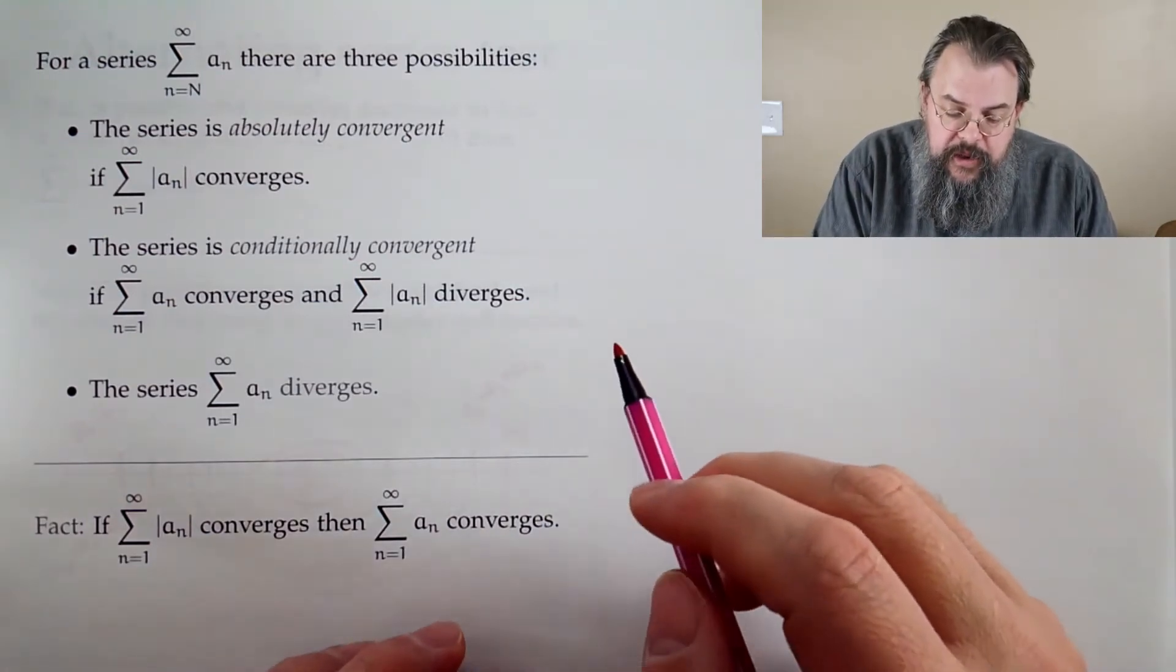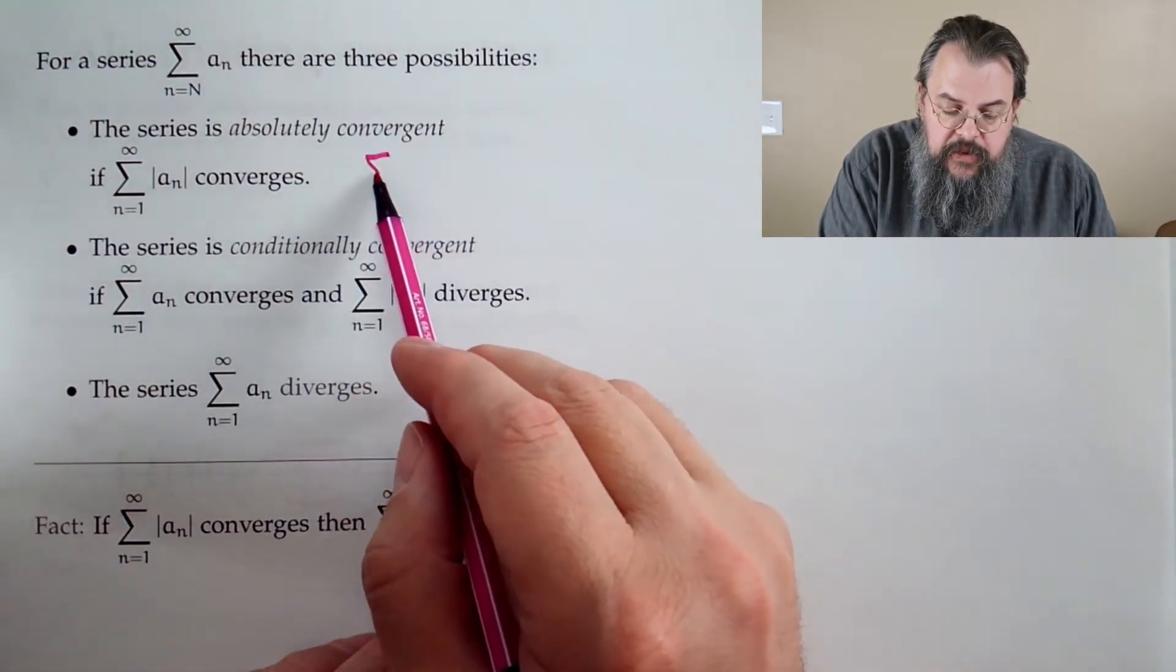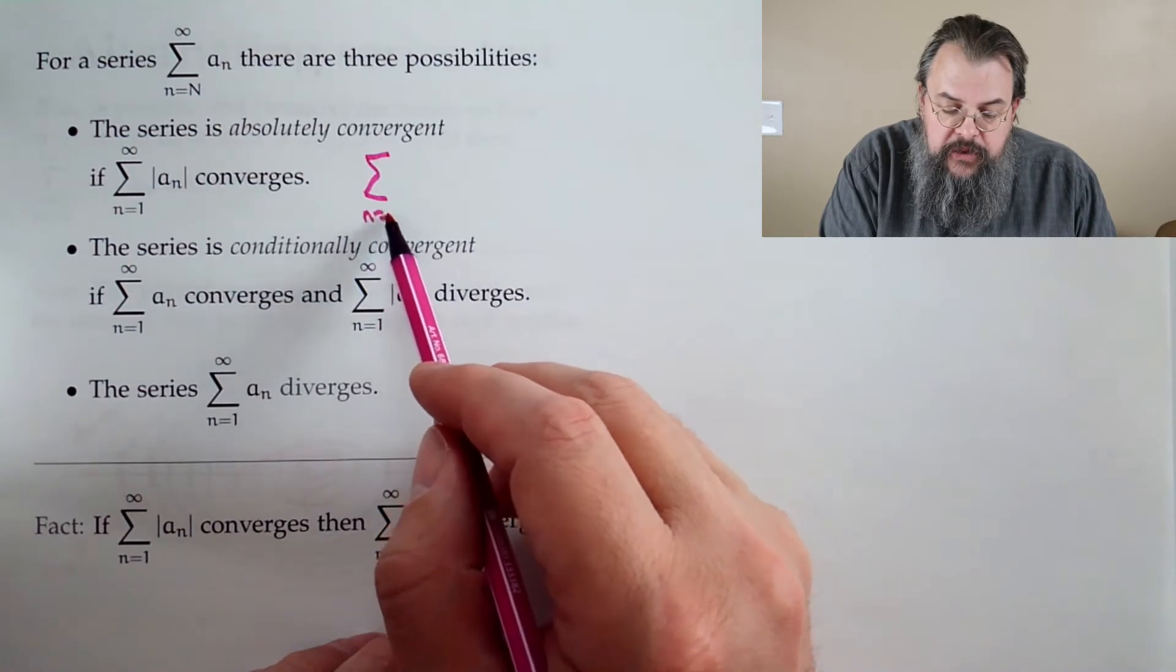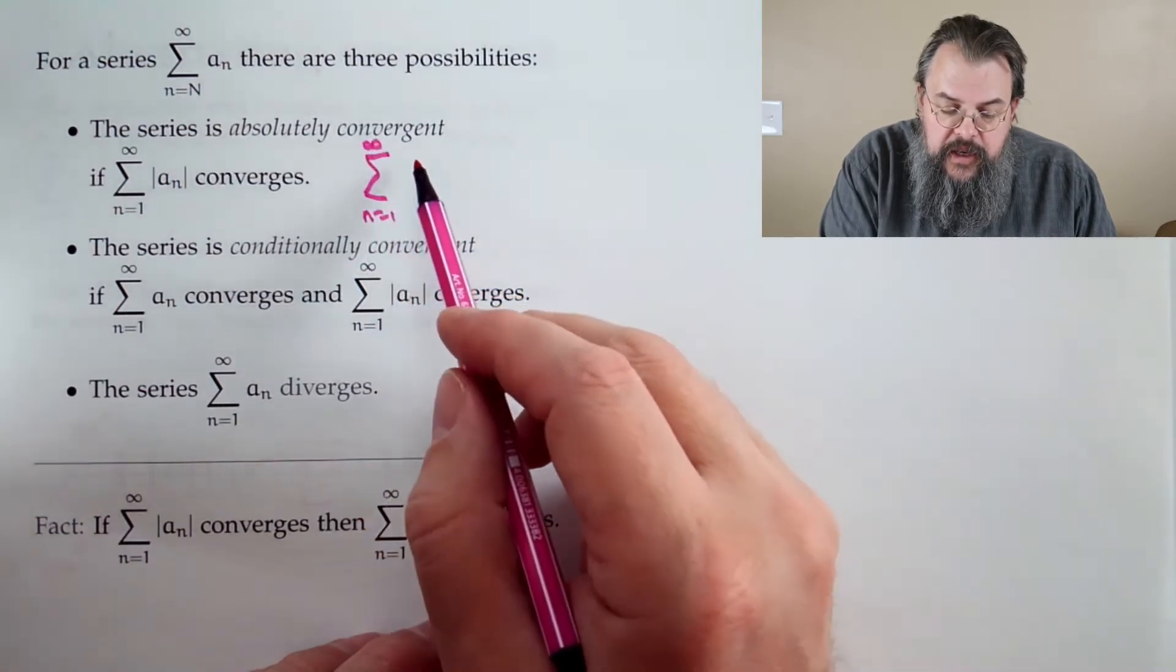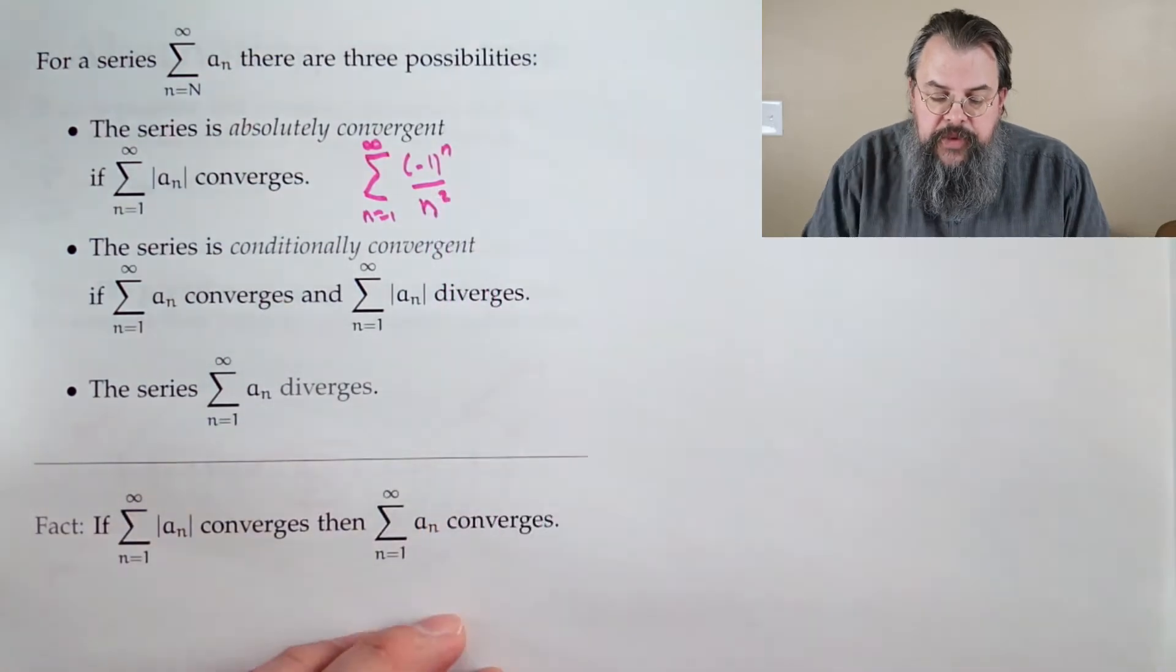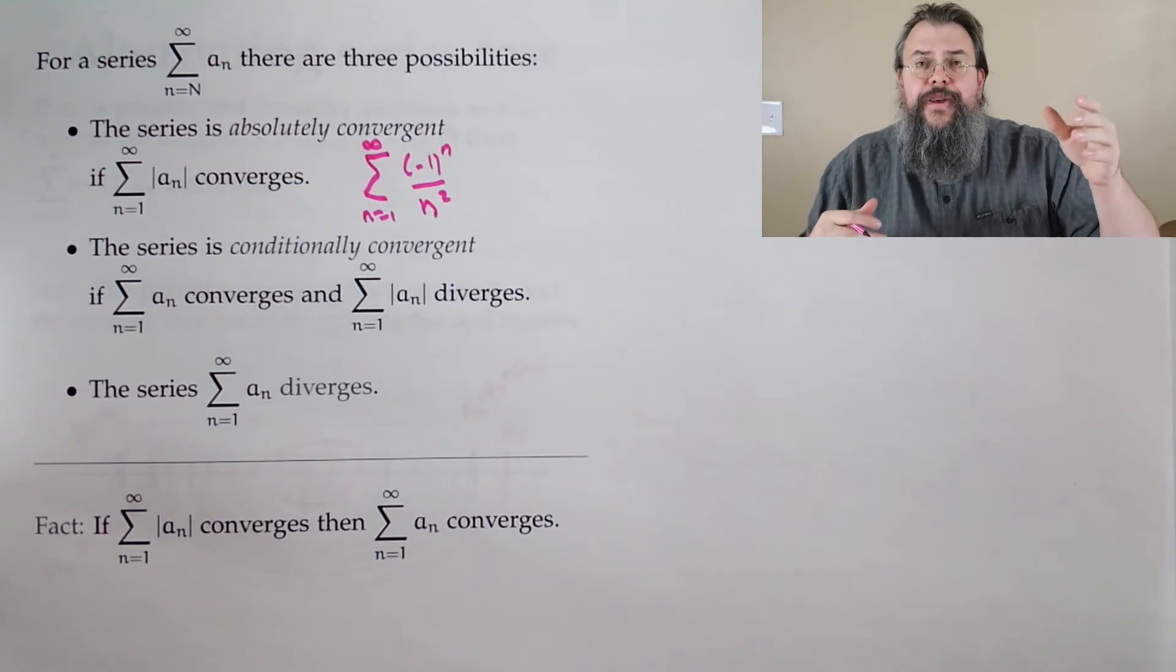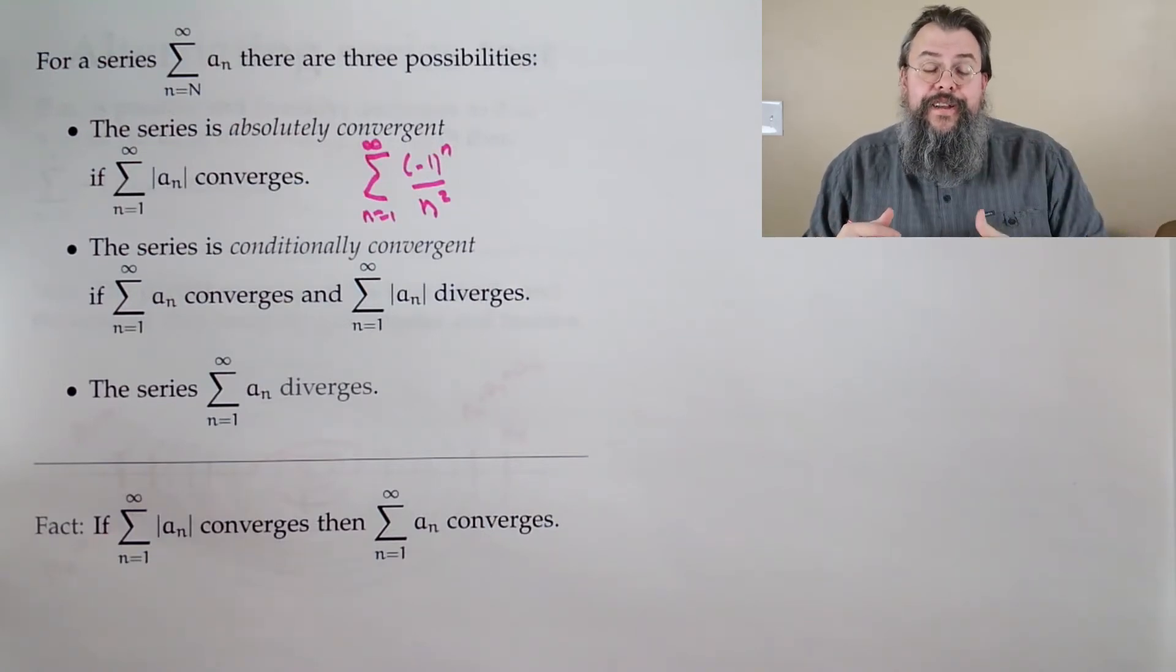But maybe you do. Now, what's an example? We should give examples. If you look at the sum from 1 to infinity of (-1)^n over n squared, absolutely convergent. Why? Because the (-1)^n doesn't really do anything. Because the sum of 1 over n squared, that's a p-series that converges.